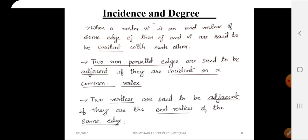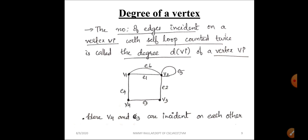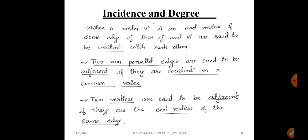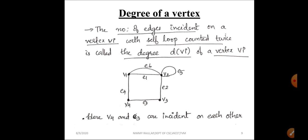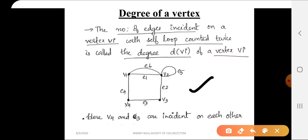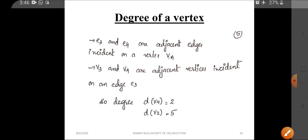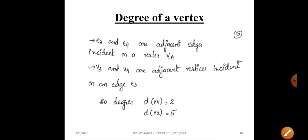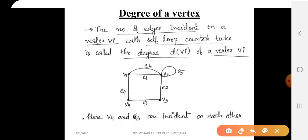Here in the diagram, v4 and e3 are incident on each other. Then e3 and e4 are called adjacent edges because they are incident on a common vertex v4.